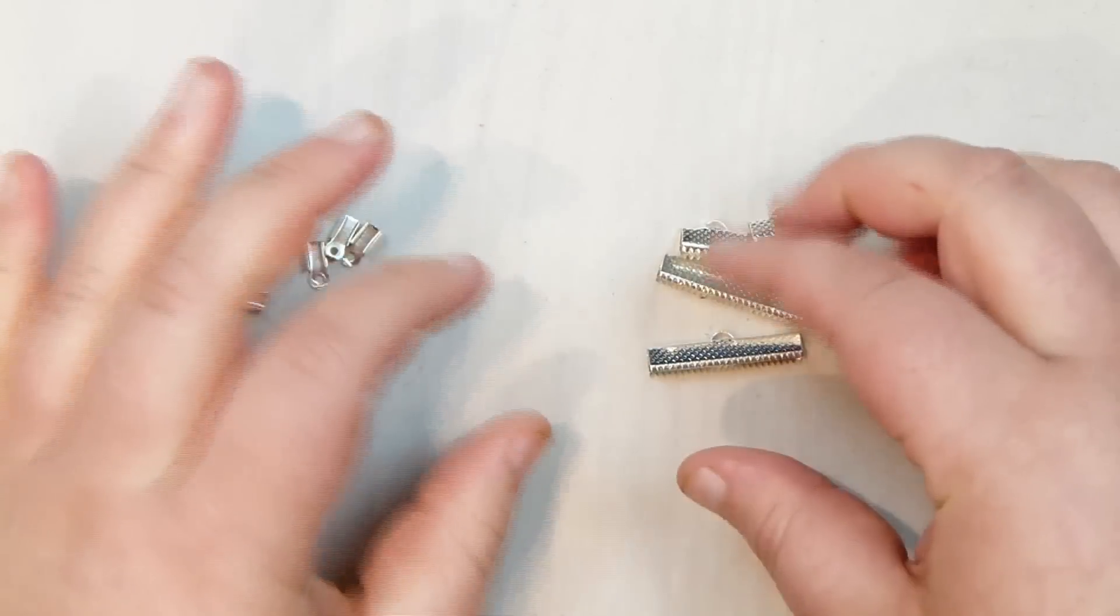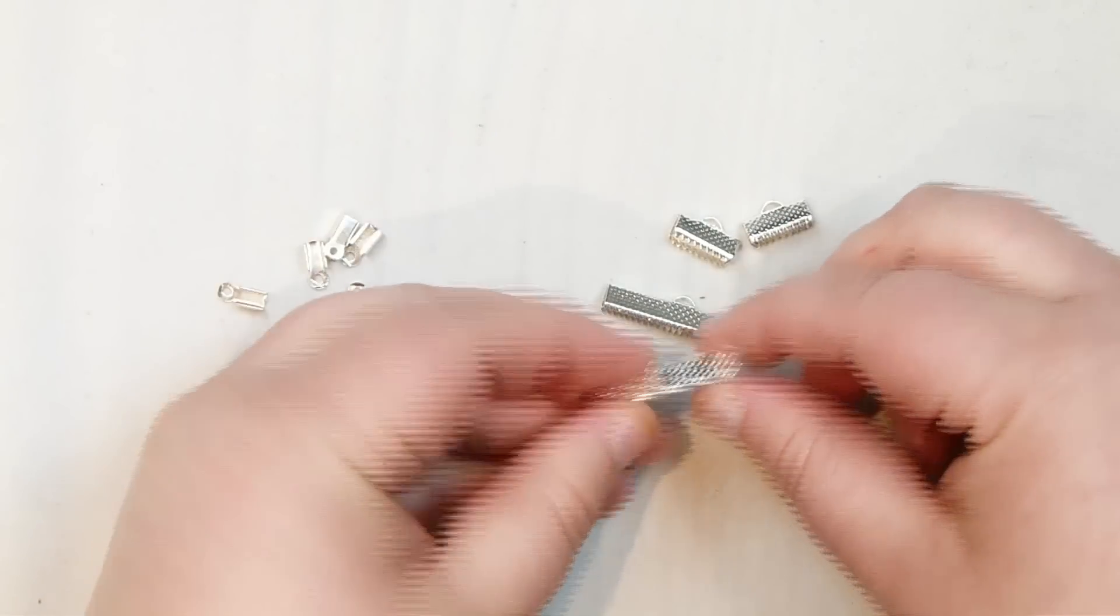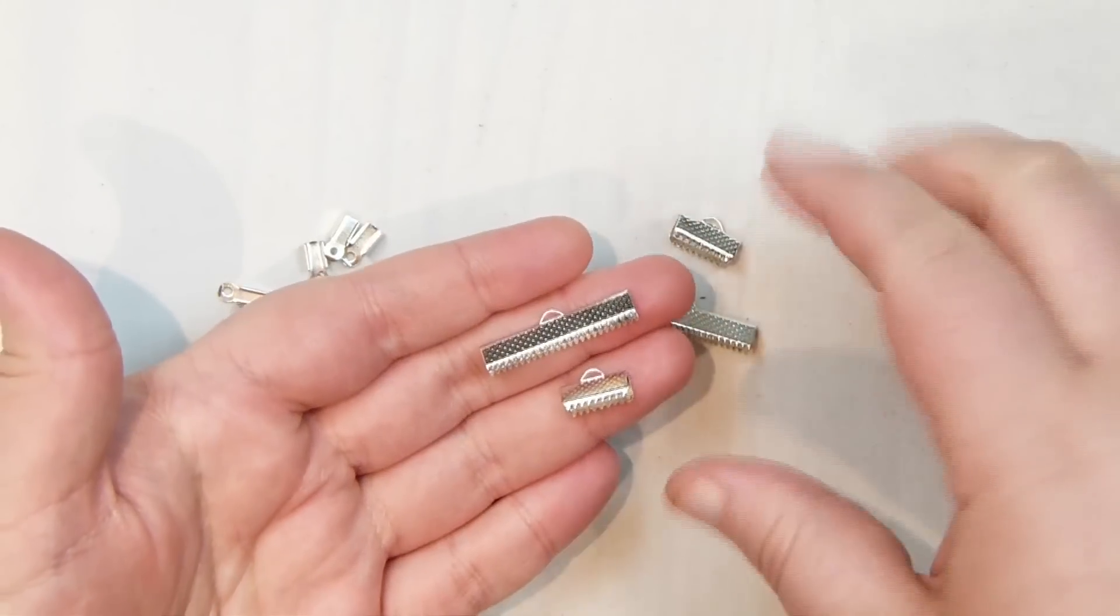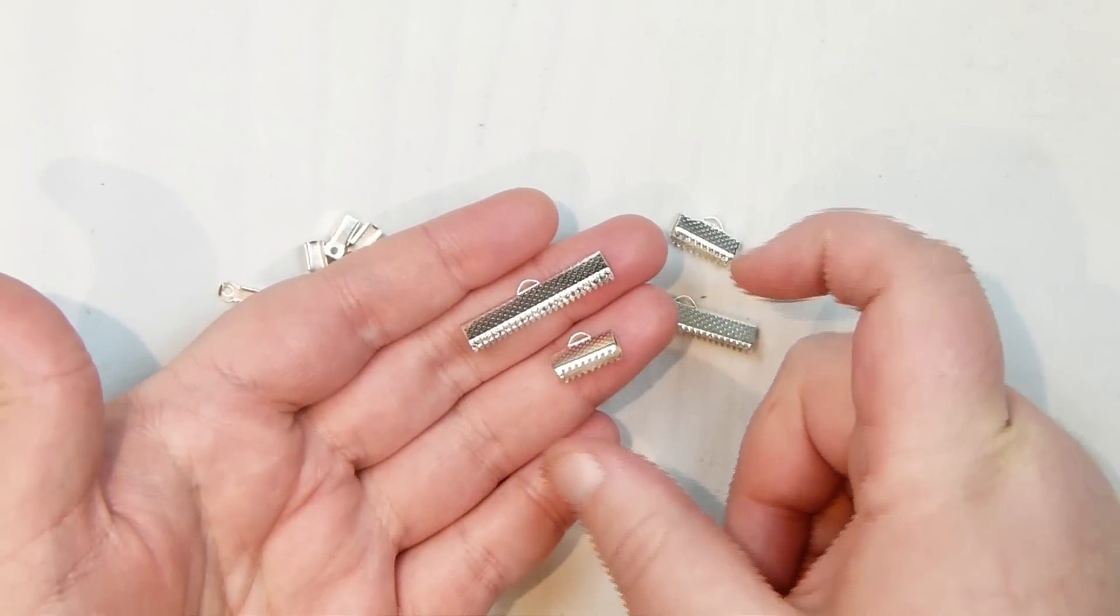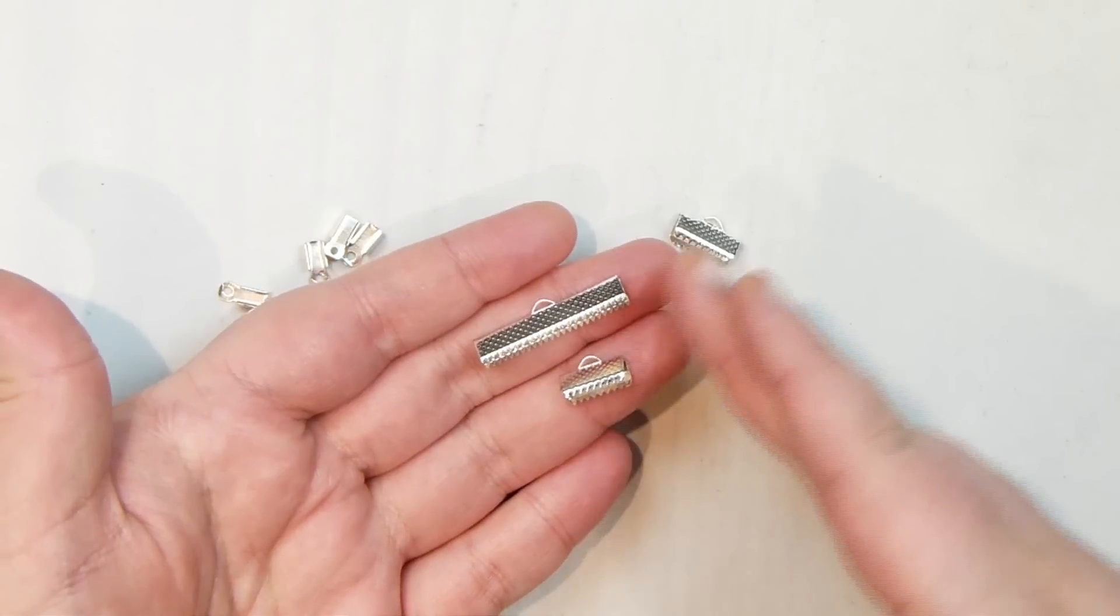And then if you have more of a wide, say a wider bracelet, then I like to use these ribbon ends. So these are just a few examples. They come in loads of different sizes. So you can get them specifically to match your project, whether you have a narrow one or one wider one. So they come in loads of different sizes.